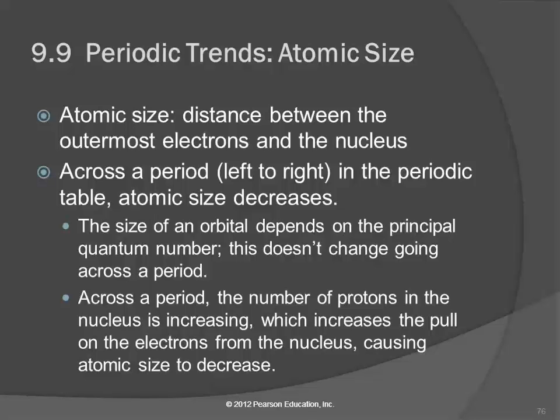If we go across a period, meaning from left to right like we would read in a periodic table, the atomic size decreases. That is counterintuitive on the surface. The reason is that the size of an orbital is going to depend on the principal quantum number. As you're going across from sodium to magnesium to aluminum to silicon all the way over to argon, the principal quantum number is staying the same - it's three for all of them.